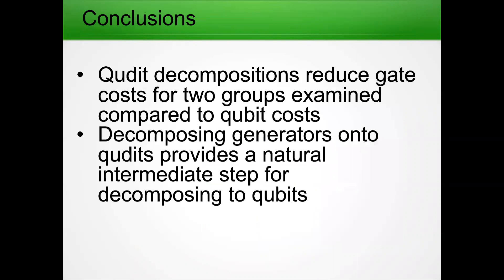So what can we take away? These qudit decompositions reduce gate costs for the two groups I've looked at, and I'm still actively working on how to extend this to other groups. Decomposing the generators onto these qudits — once we've broken down our system into smaller chunks — means that even if we never get a fault-tolerant qubit or a fully scaled NISQ qubit, we can break it down into qudit operations that may also be leverageable in a fault-tolerant era. Thank you — any questions?